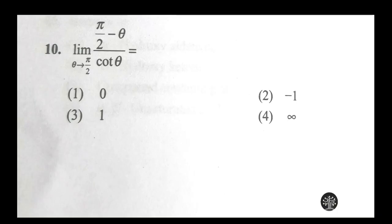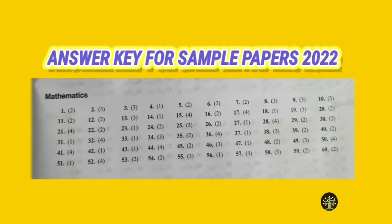So the next question follows the same pattern. We find similarities among options. The second option is minus one and the third option is plus one — both are one in magnitude. The other option is zero (neutral) and fourth is infinity. Plus dominates, so we can confirm the third option will be the correct answer. Let's check: for the tenth question, the correct option is option three. We got another correct answer without studying or knowing the syllabus.